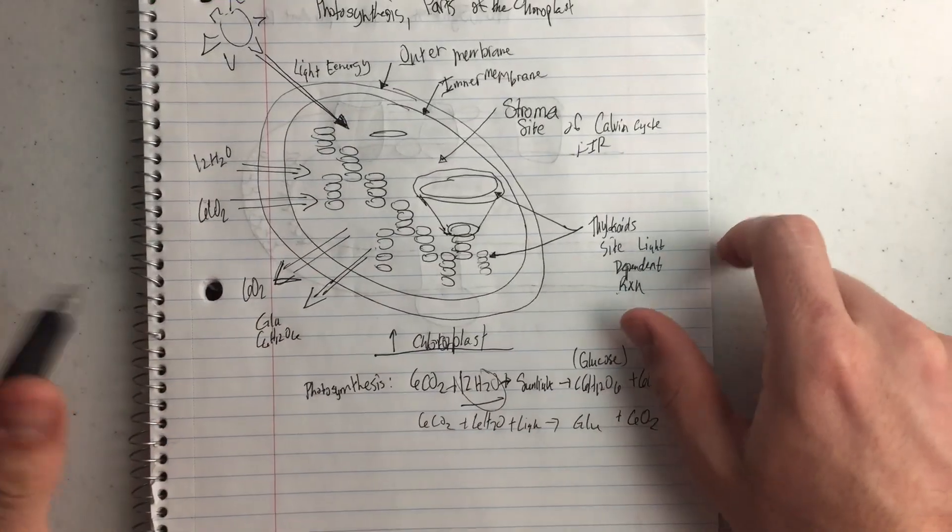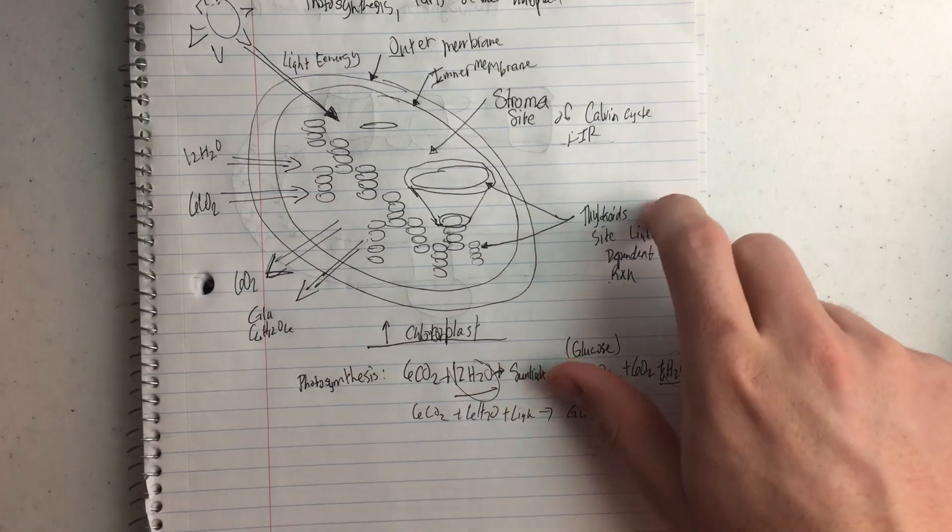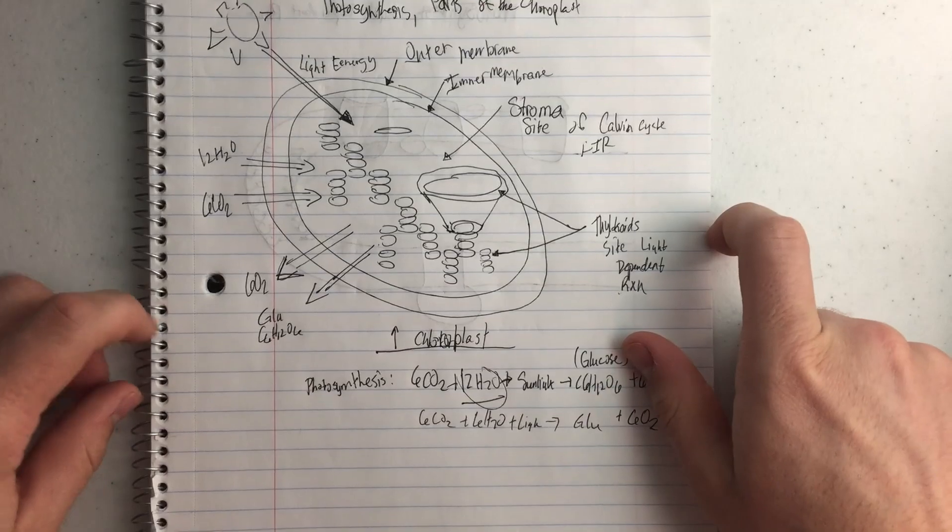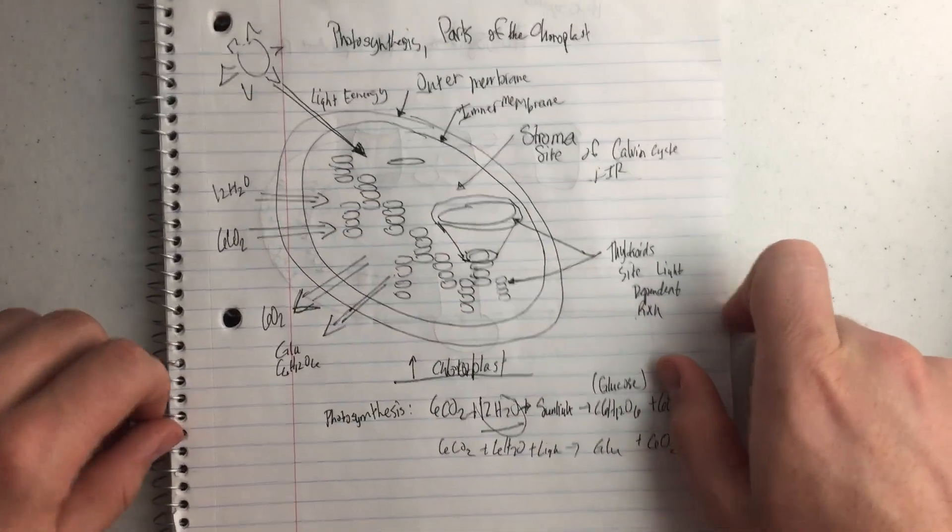So I hope that gives you a bit of an overview of the structure of the chloroplast and the reactants and products moving in and out of it to make some energy for the cell. Hope that was helpful.